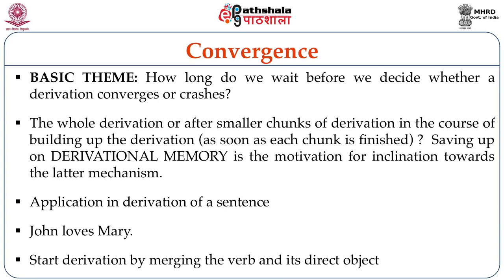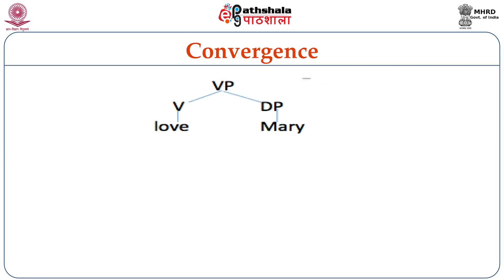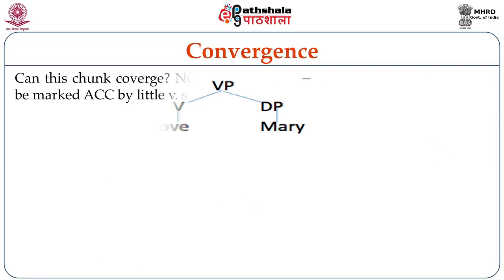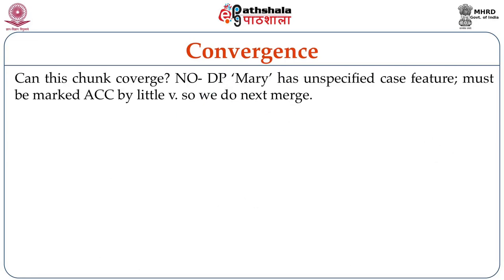We start the derivation of this sentence by merging the verb and its direct object. You can see the structure in diagram 2 on screen, where DP Mary gets merged with big V head to give us this VP. Now, can this chunk converge? The answer is no, because DP Mary has an unspecified case feature which must be marked accusative case by little v. This unspecified case feature stops it from converging.